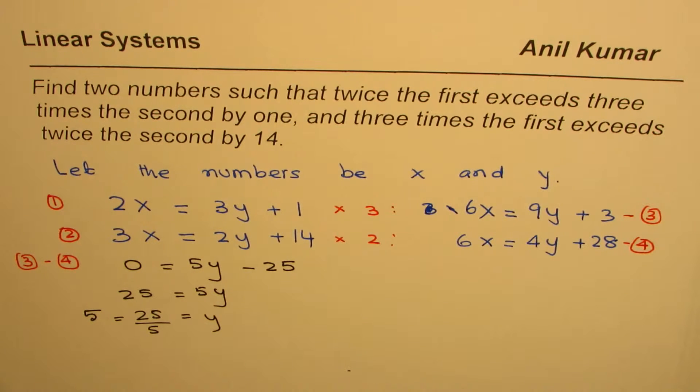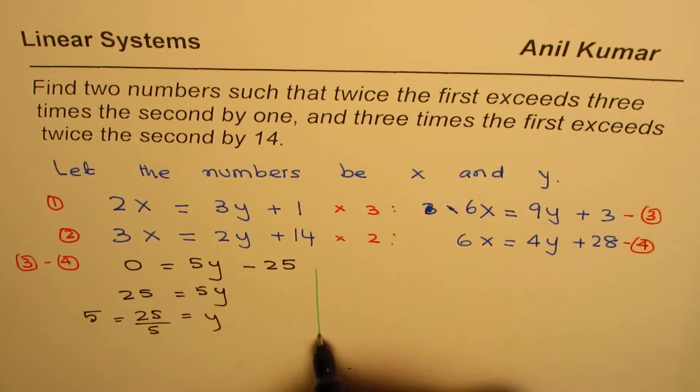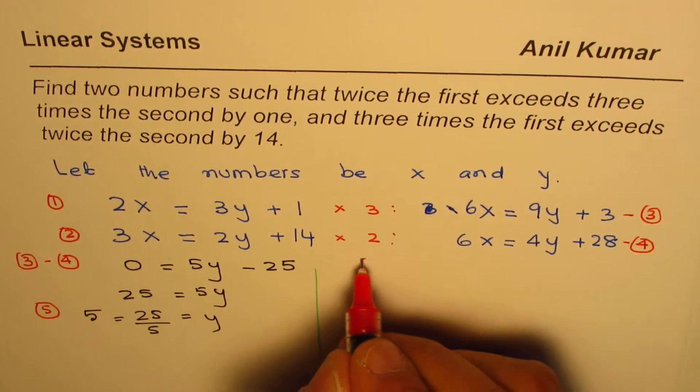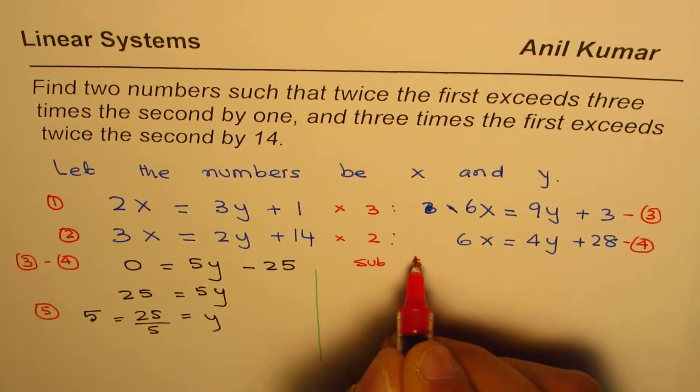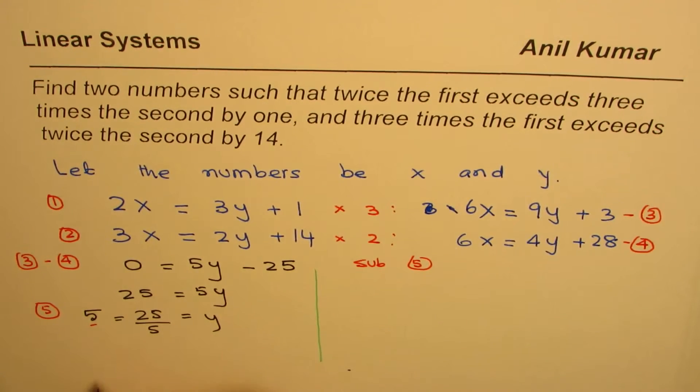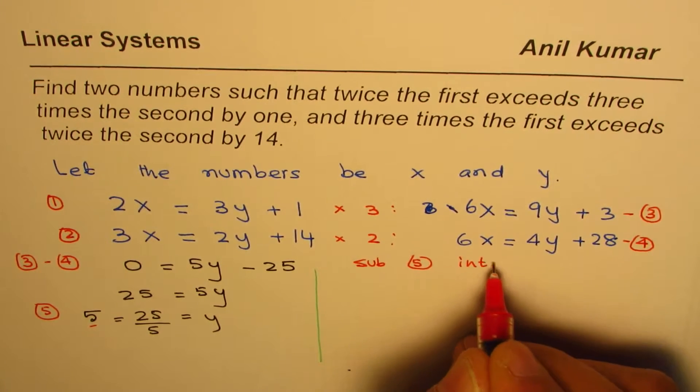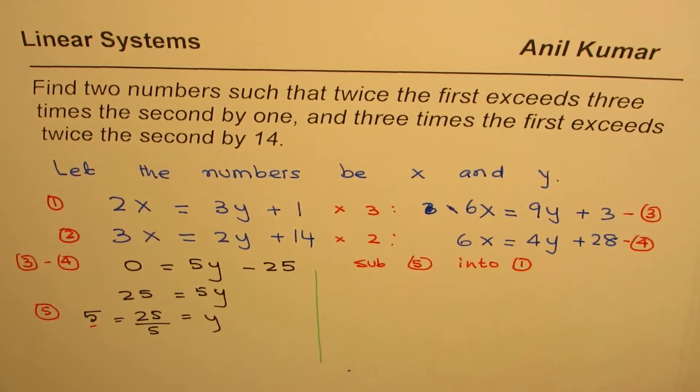Substitute this value into any equation. Let's call this equation 5. We'll substitute y = 5 into equation 1 to find x. We have 2x = 3(5) + 1.